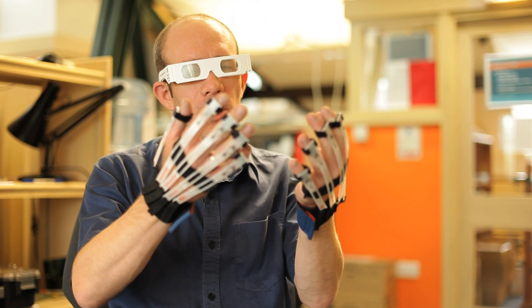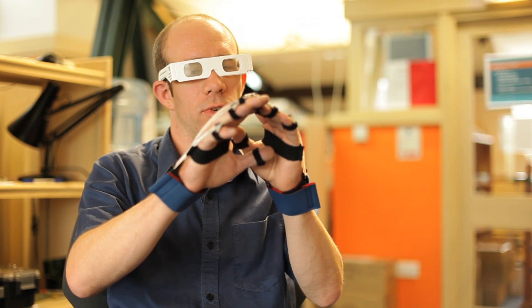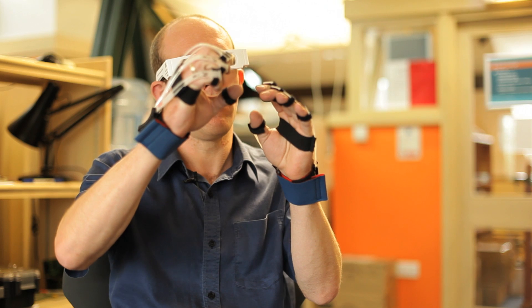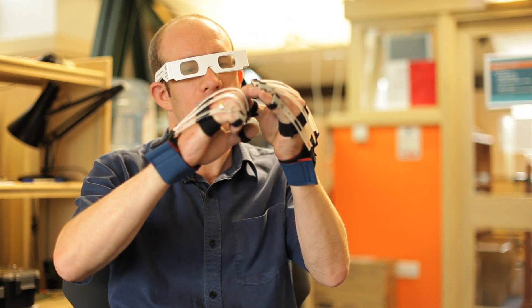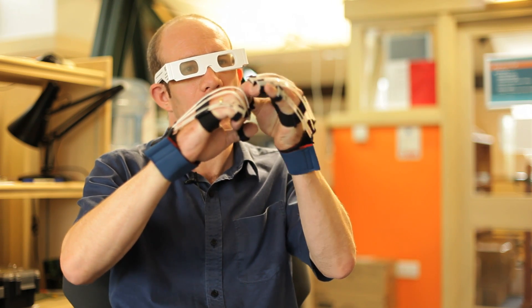I'm now going to try the same task again, wearing our Cambridge simulation gloves. These have been designed to simulate arthritis of the knuckle joints, which means that the more I rotate my knuckle joints, the more it would hurt. And that's simulated on these according to the pressure of the plastic against my knuckles here.